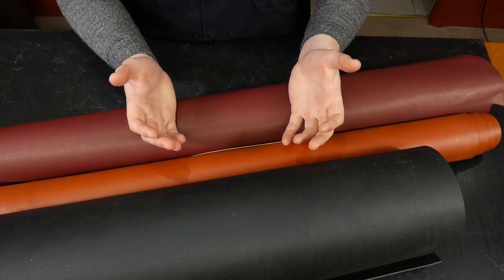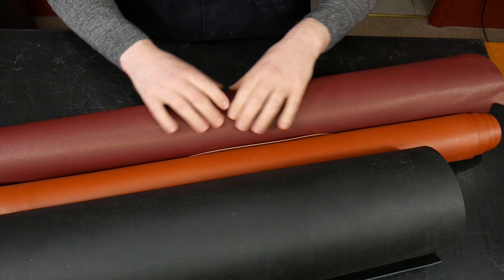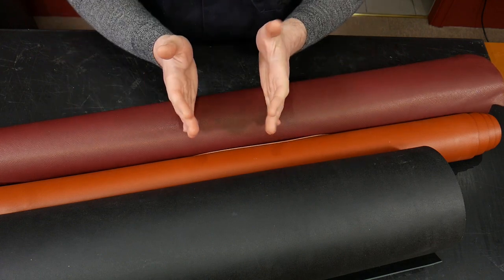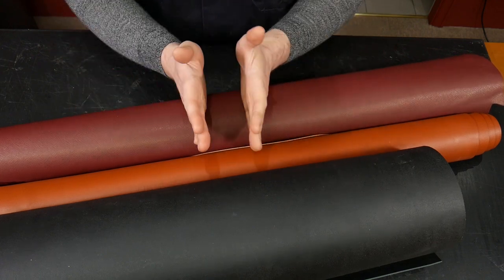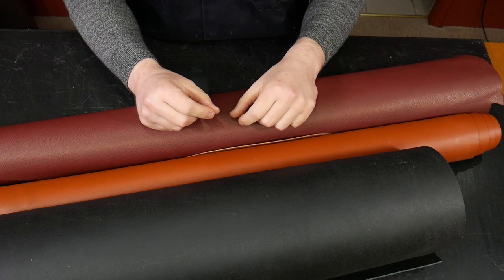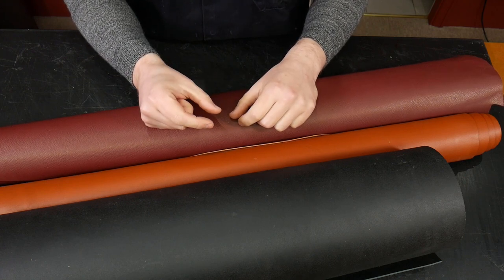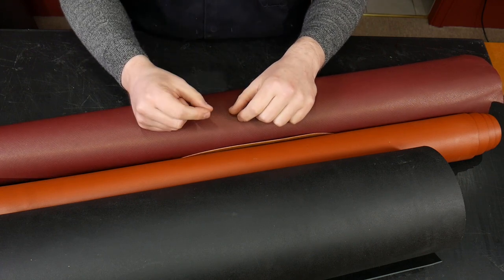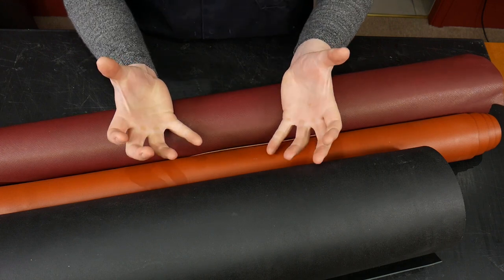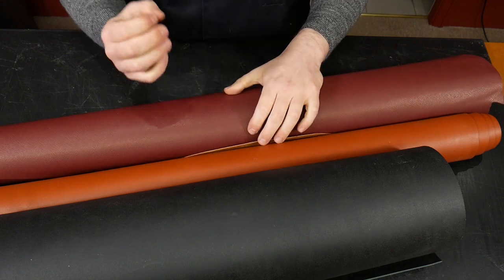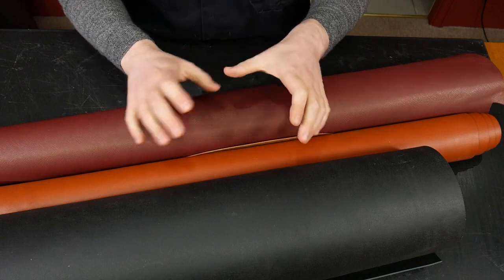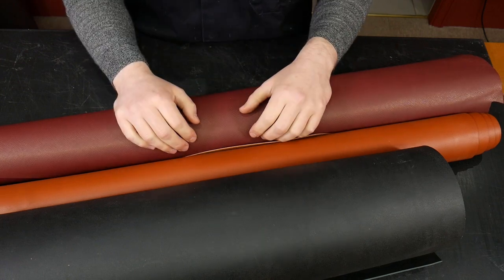A calf is just a young cow so it's cowhide but smaller. What you're going to get is a thinner thickness of hide, a thinner flesh layer, corium layer and grain layer. The grain is much tighter than on cowhide for example which can tend to be quite loose depending on how it's processed.